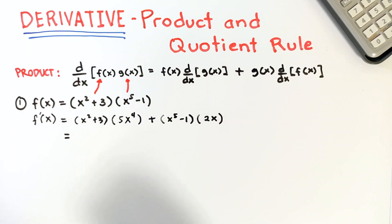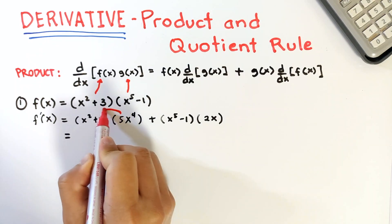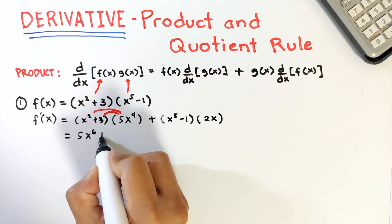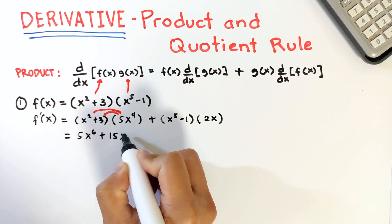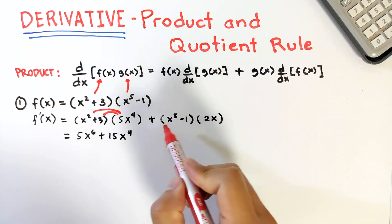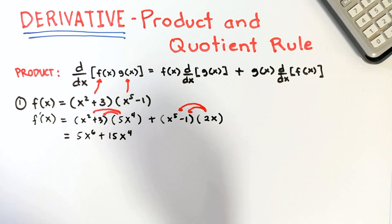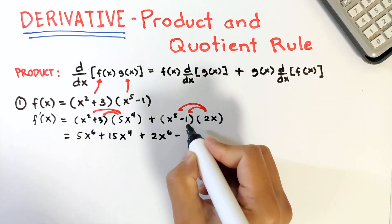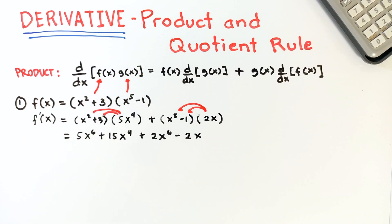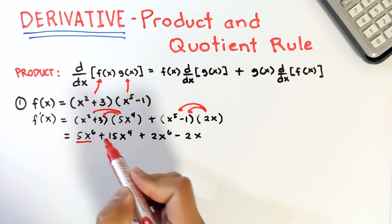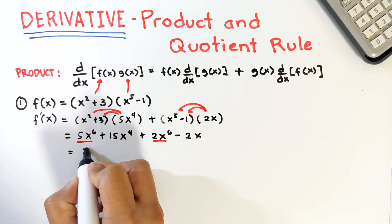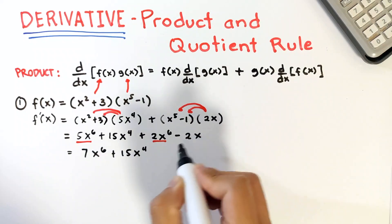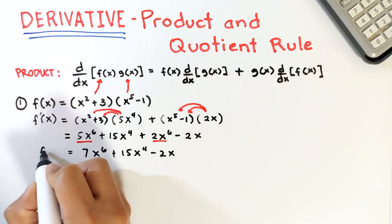Now let's simplify by distributing 5x raised to 4 into the binomial: that gives 5x raised to 6 plus 15x raised to 4. For the second term, distribute 2x: that gives 2x raised to 6 minus 2x. Combining like terms, 5x⁶ plus 2x⁶ is 7x raised to 6, then copy 15x raised to 4, and minus 2x. So the derivative of the function is 7x⁶ + 15x⁴ − 2x.